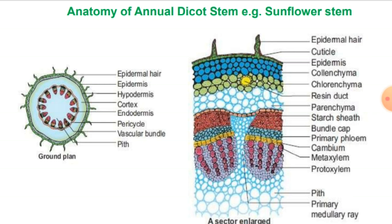Then why does secondary growth not take place in the extra-stellar region — meaning the non-vascular region? The reason is that this plant is annual; its life cycle is completed within one year. The secondary growth expected by this dicot plant occurs in the vascular region, and that much growth is sufficient for the entire life cycle of the sunflower stem.